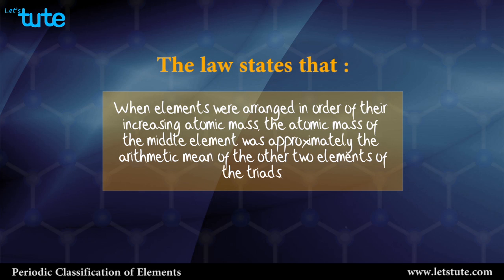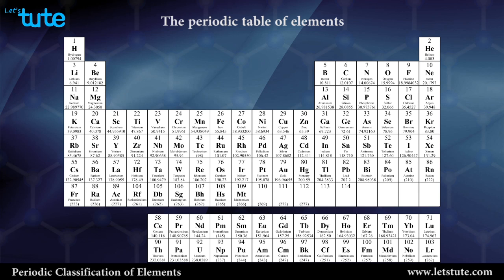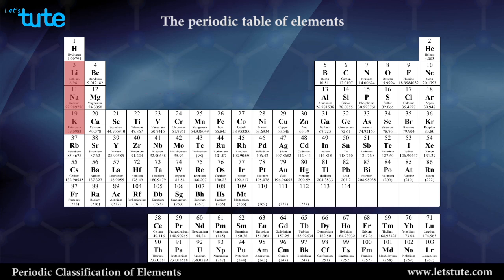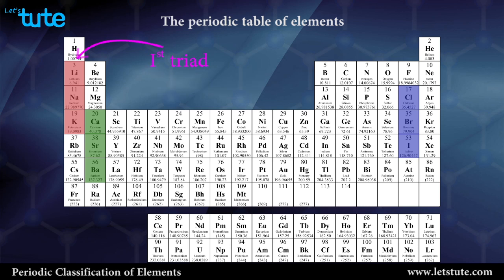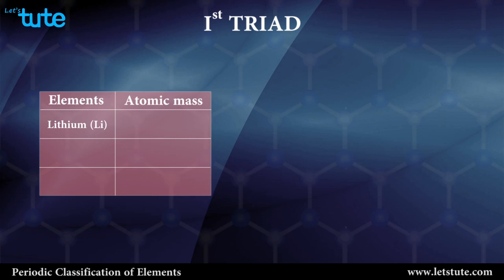Let us take a look at the three Dobereiner's Triads. In the table given below, the first triad is lithium, sodium, and potassium. The second triad is calcium, strontium, and barium, and the third triad is chlorine, bromine, and iodine. Let us first concentrate on the first triad — lithium, sodium, and potassium. The atomic mass of lithium is 7, the atomic mass of sodium is 23, and that of potassium is 39.